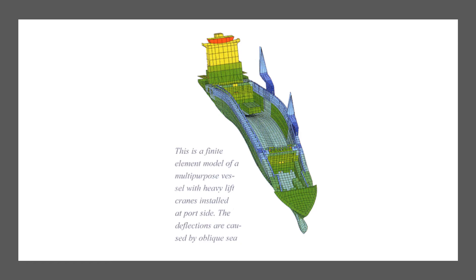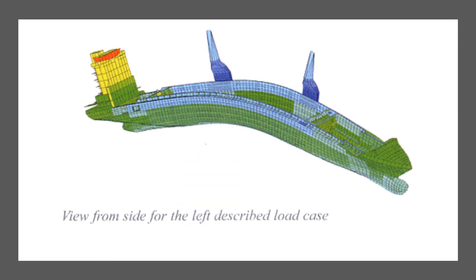This is a finite element model of a multi-purpose vessel with heavy lift cranes installed at the port side, and the deflections are caused by the oblique sea — that is, how the sea is interacting with the vessel in motion causing deflections. This is the side view for the same load case described previously, showing again the multi-purpose vessel with heavy lift cranes at the port side and how forces are acting on the vessel due to deflections caused by the sea.